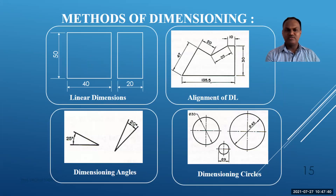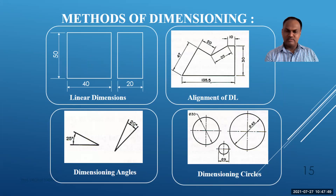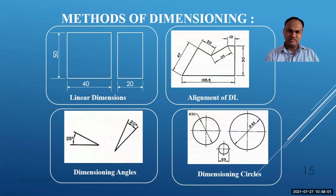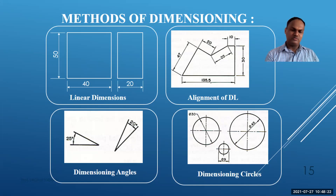Linear dimensions such as 40, 20, and 50 are shown using the linear dimension method. For inclined features, the dimension line is drawn parallel to that inclined surface. For angular dimensions, the angle value — such as 25° or 20° — is written in a curved dimension line following the arc of the angle.